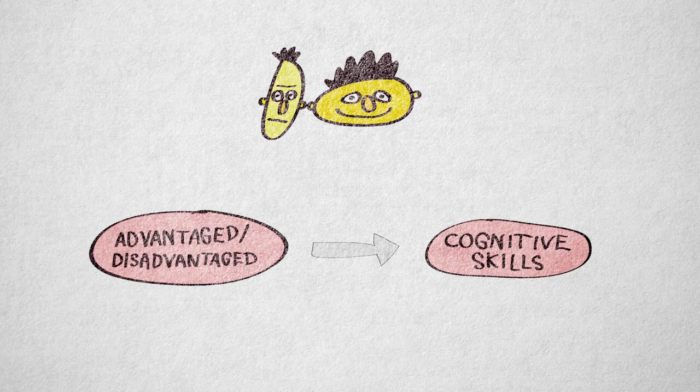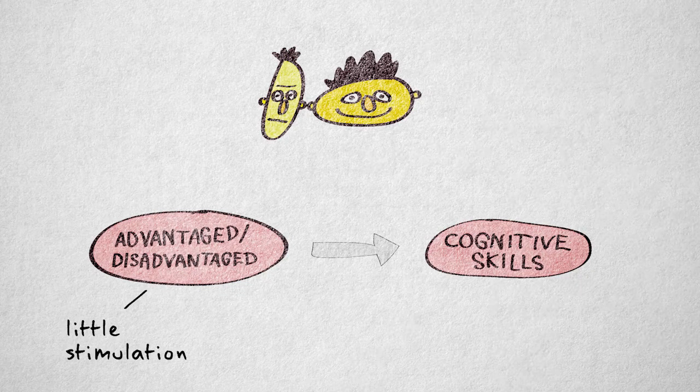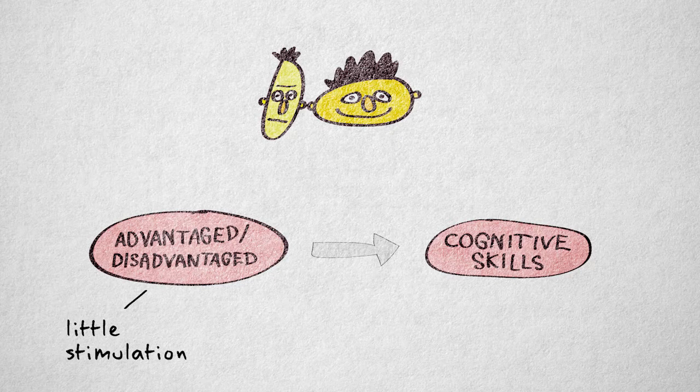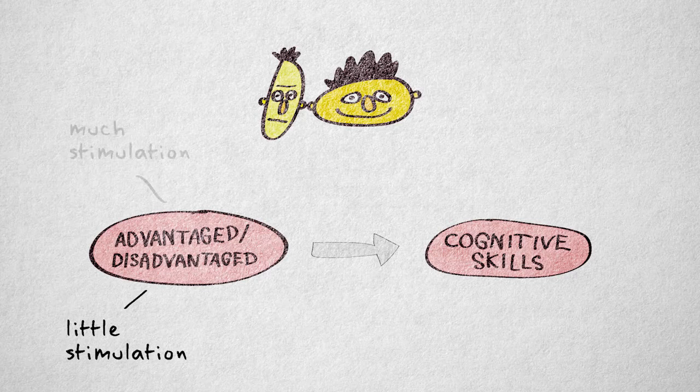Let's say our disadvantaged toddlers come from poor, broken homes. They receive very little stimulation to develop cognitive skills like reading and counting. The advantaged children have nurturing parents and are provided with ample educational stimulation.